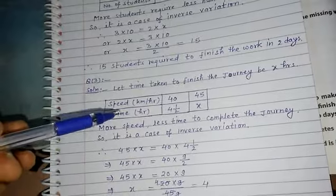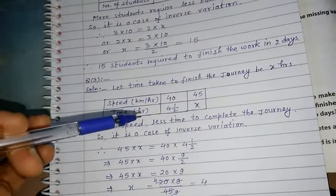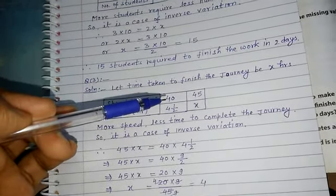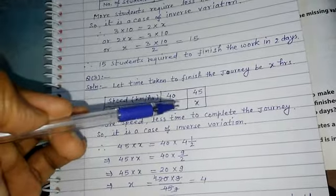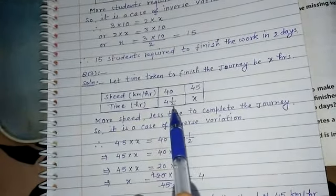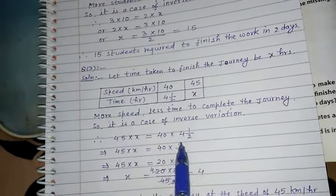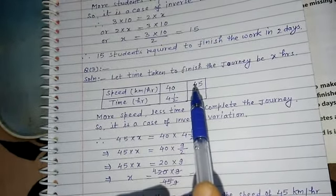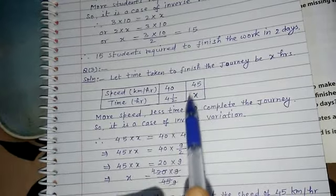Here speed and time - two quantities are given. Speed is given and time is given. 40 km, time is four and half. Given in mixed form, we'll convert to fraction later: 4, 2, 8, 8+1 is 9, so 9 by 2. Here 45 km per hour - speed increased from 40. So time here, we assume x.